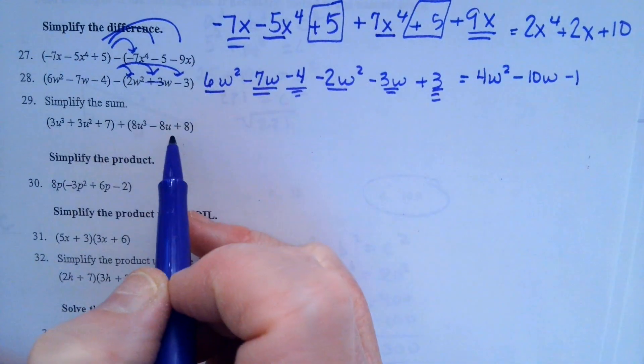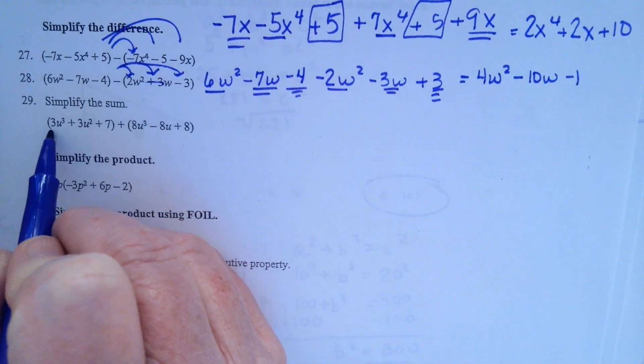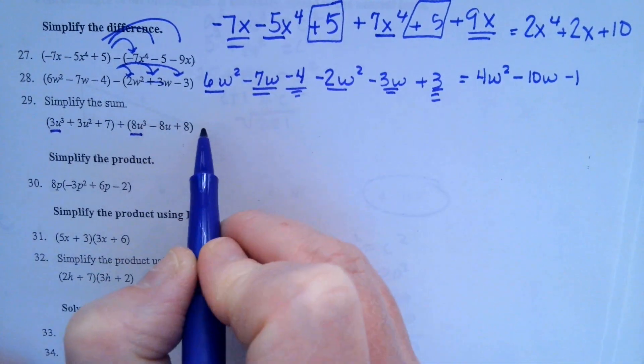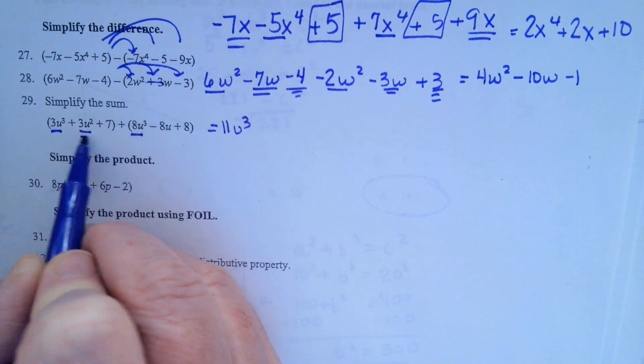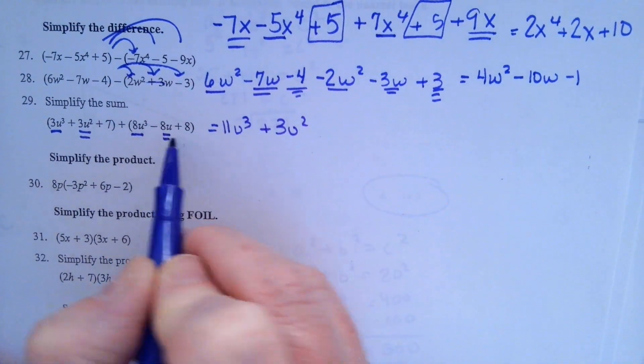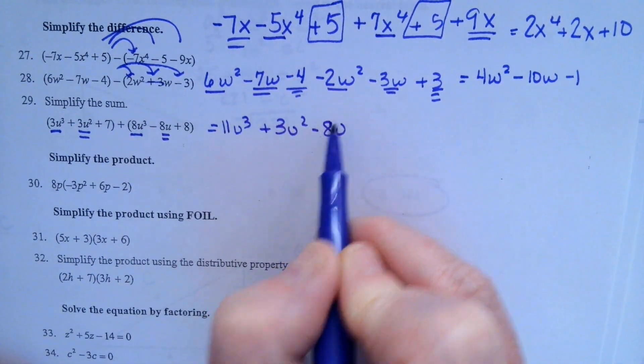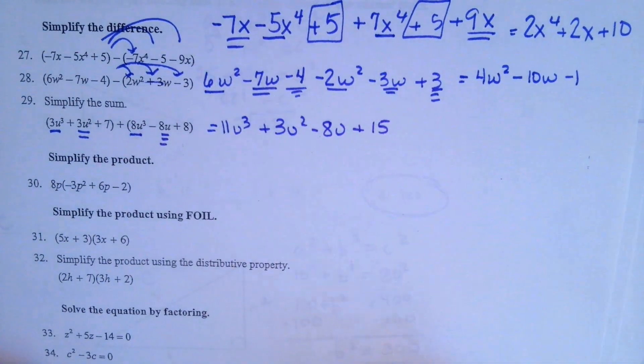Now when you're simplifying the sum, you don't have to rewrite it. All you have to do is pick out the like terms. 3u cubed plus 8u cubed is 11u cubed. 3u squared doesn't have anything that matches it. So negative 8u, 7 and 8 make 15. So that's that one.